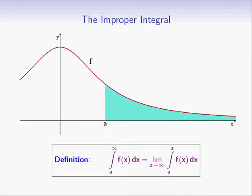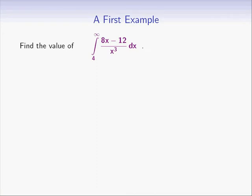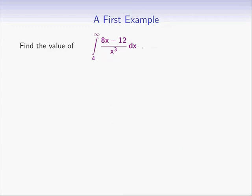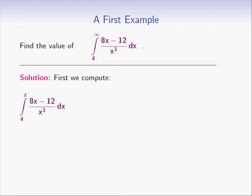Let's have a look at our first example. Find the value of the integral from 4 to infinity of (8x minus 12) over x cubed dx. Although a graph is not needed for solving this problem, seeing a diagram is often helpful. Here's the graph of the function y equals (8x minus 12) over x cubed. We're going to find the area of the region bounded by the graph of this function and the x-axis on the interval from 4 to infinity. We start by computing the definite integral obtained by replacing the upper bound infinity with a z, so we first compute the integral from 4 to z of (8x minus 12) over x cubed dx.